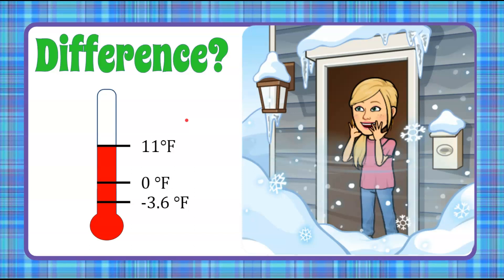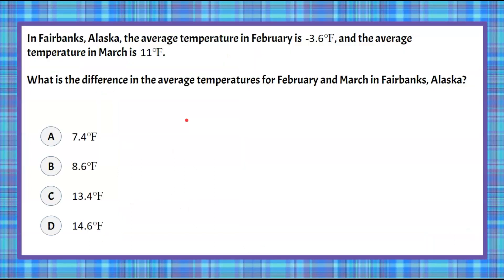Here's our question today. In Fairbanks, Alaska, the average temperature in February is negative 3.6 degrees Fahrenheit, and the average temperature in March is 11 degrees Fahrenheit.